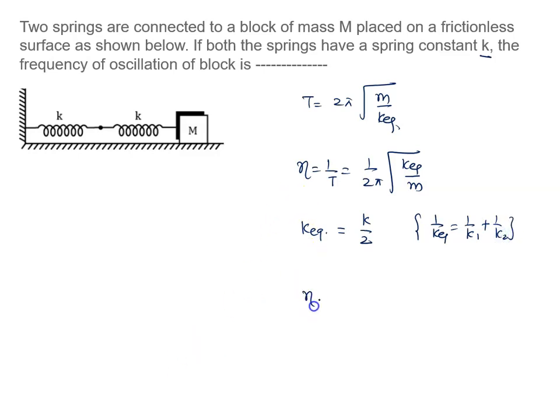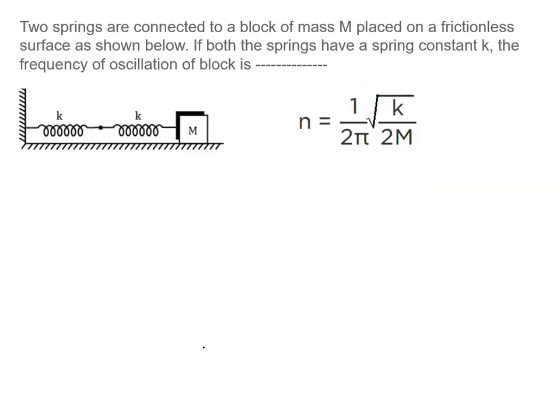So frequency is given by 1 upon 2π root k equivalent, k equivalent is given by k by 2 into mass. So the right answer of this problem will be 1 upon 2π root k by 2m.